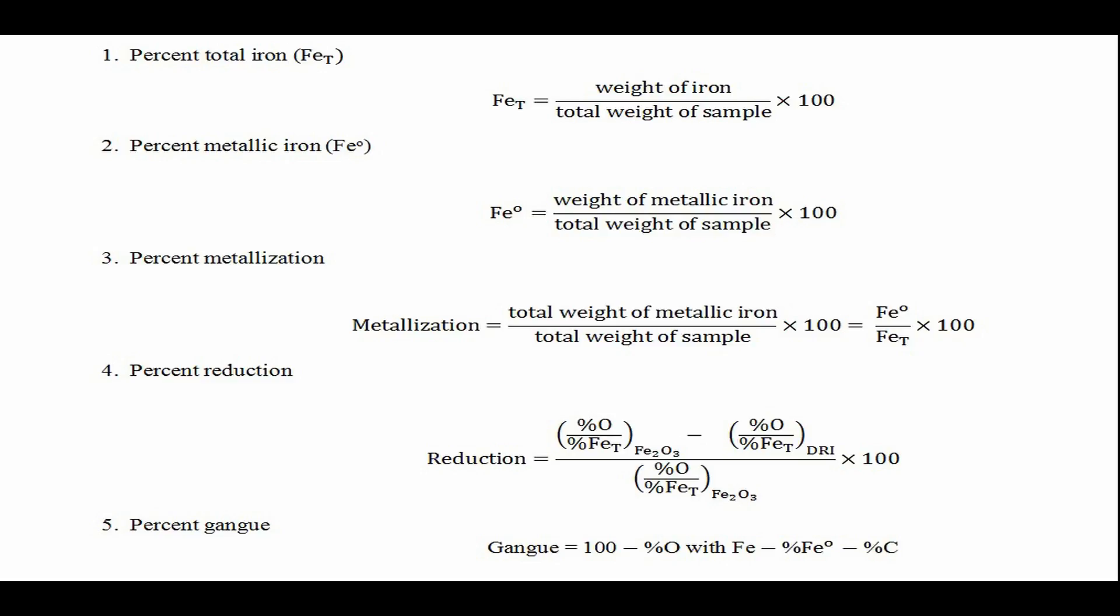Two: Percent metallic iron is iron that is chemically uncombined. This is the ratio of weight of metallic iron to total weight of a sample.